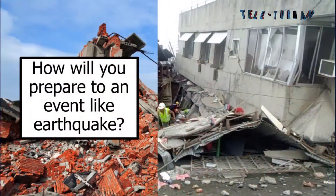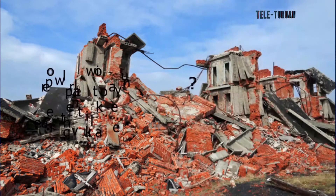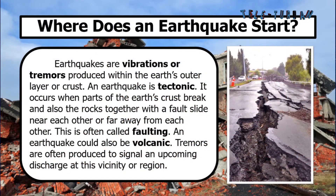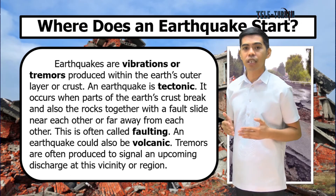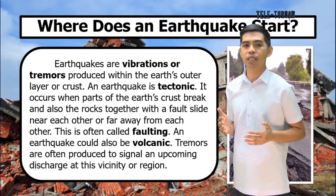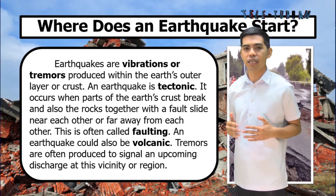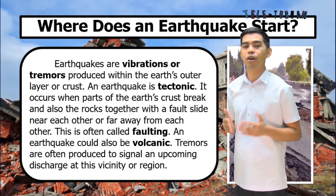Another important question to ask is: how will you prepare for an event like an earthquake? Where does an earthquake start? Earthquakes are vibrations or tremors produced within the Earth's outer layer or crust. A tectonic earthquake occurs when parts of the Earth's crust break and the rocks along the fault slide near each other or away from each other. This is often called faulting.